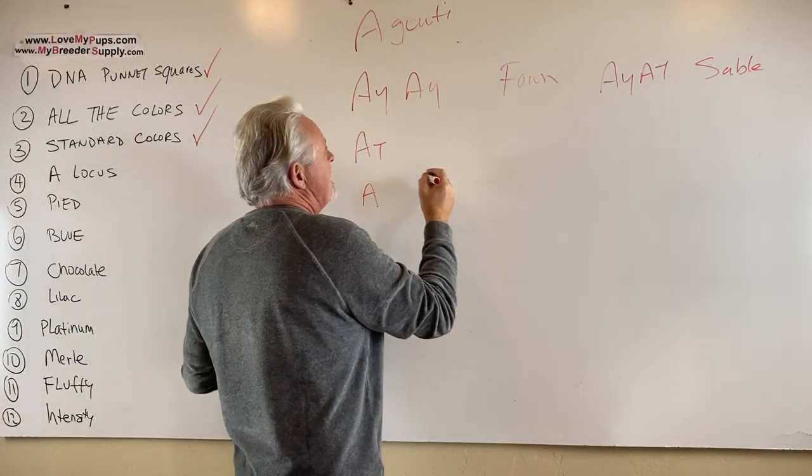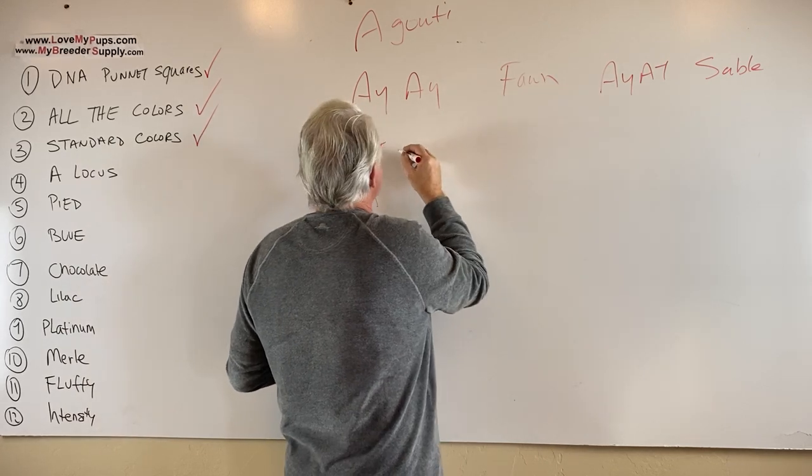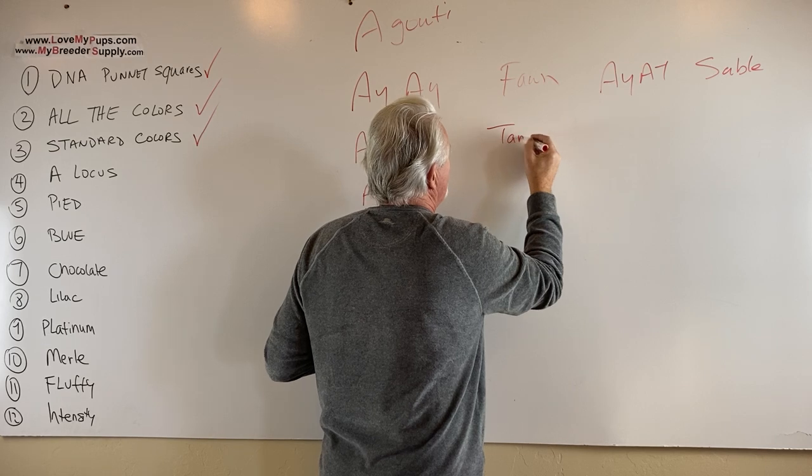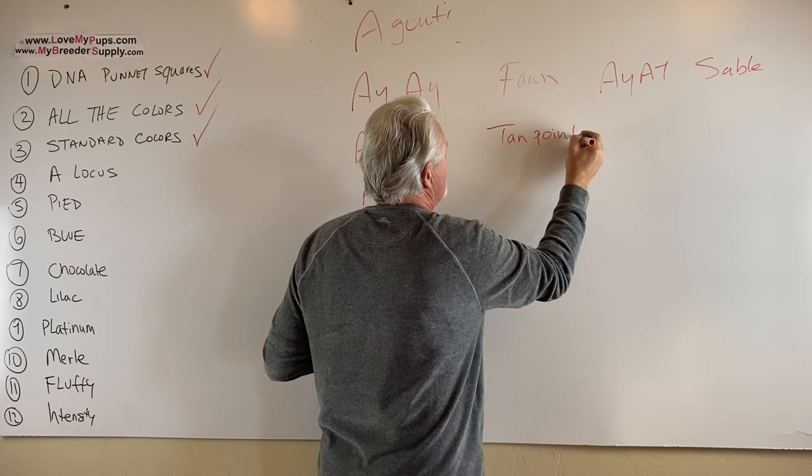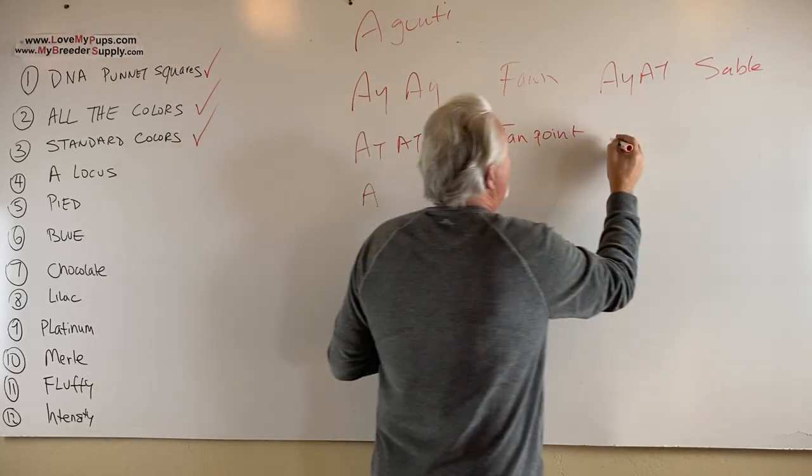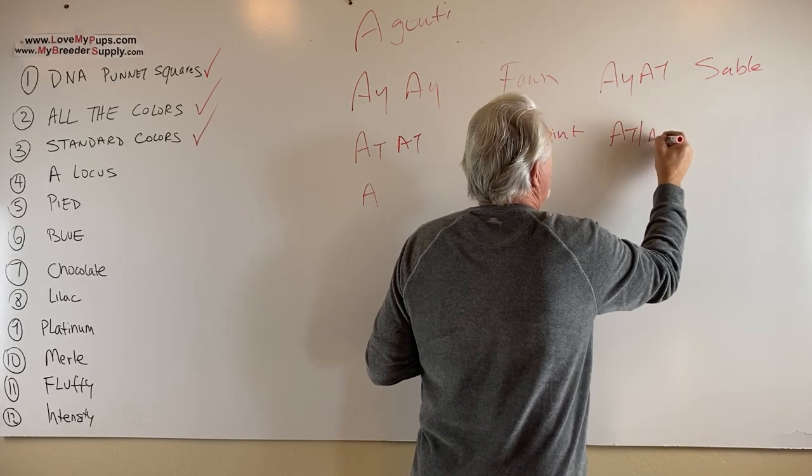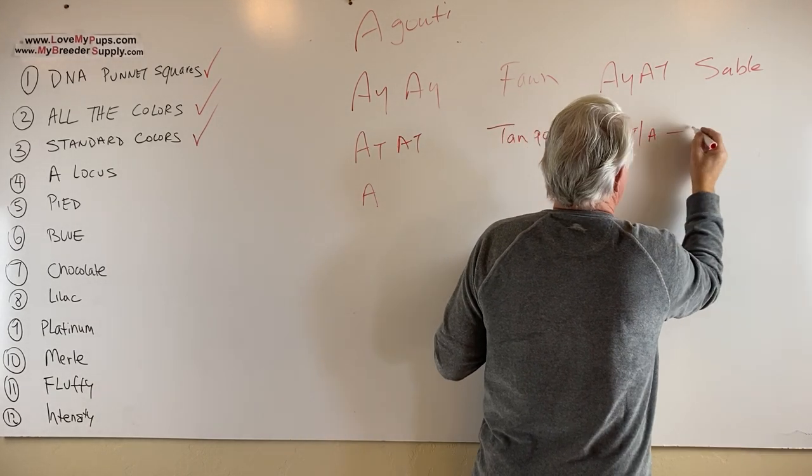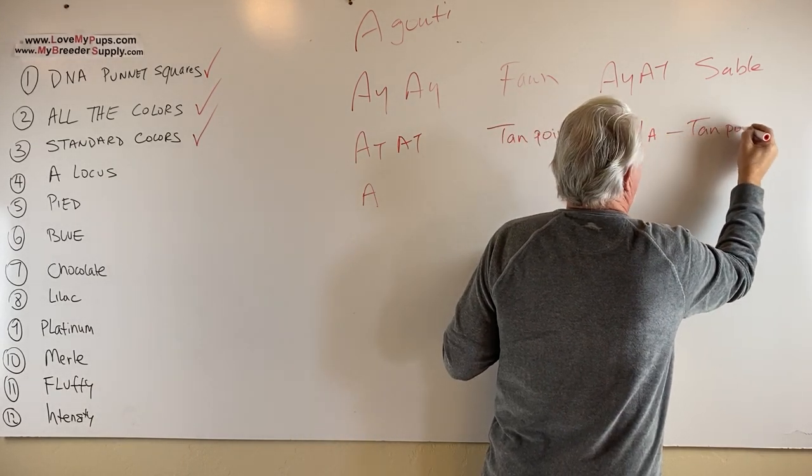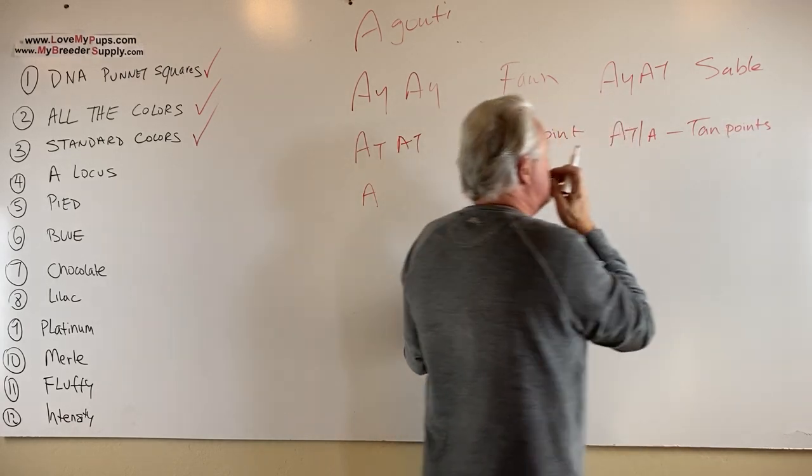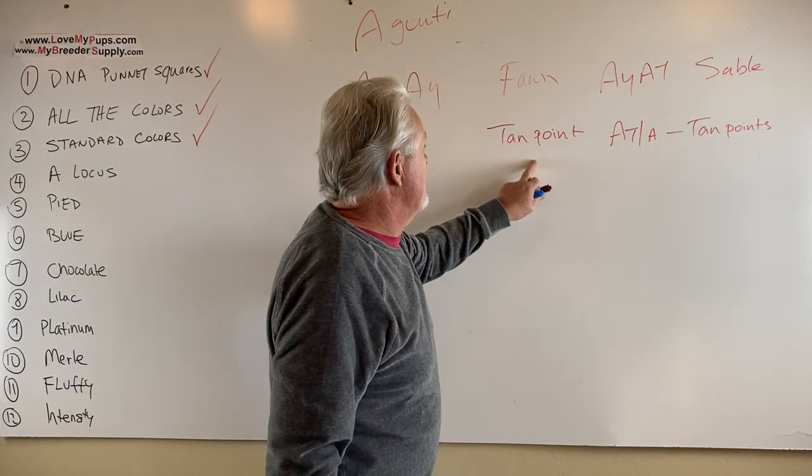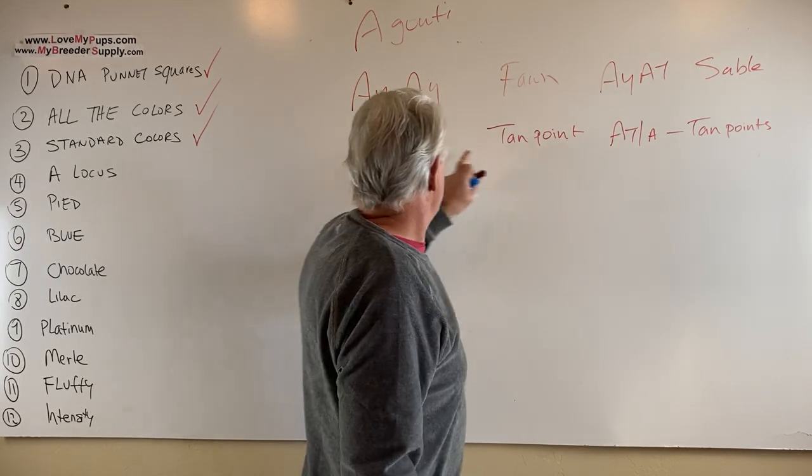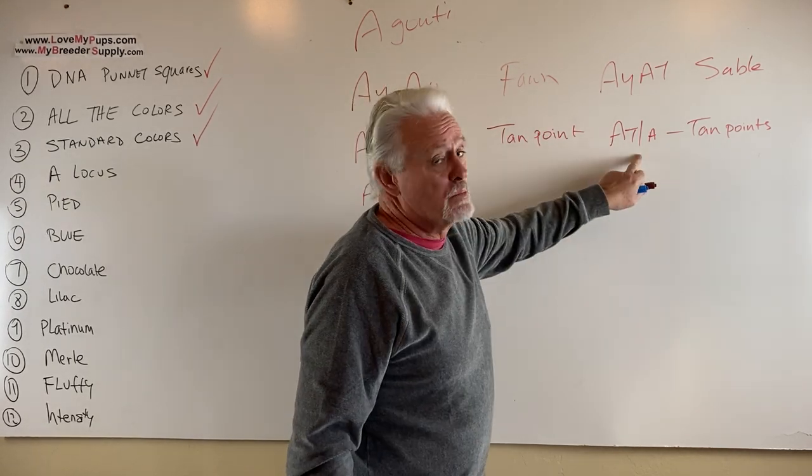If you have an ATAT dog, that's tan points. So ATAT is tan points. If you have an ATA, the A is recessive to this, it's not shown. It's still tan points. That still gets you tan points. Now, it's interesting because you can tell a difference typically in a tan-pointed dog that is ATAT versus a tan-pointed dog that is ATA. This tends to be a lighter color, this tends to be more of an orange color.